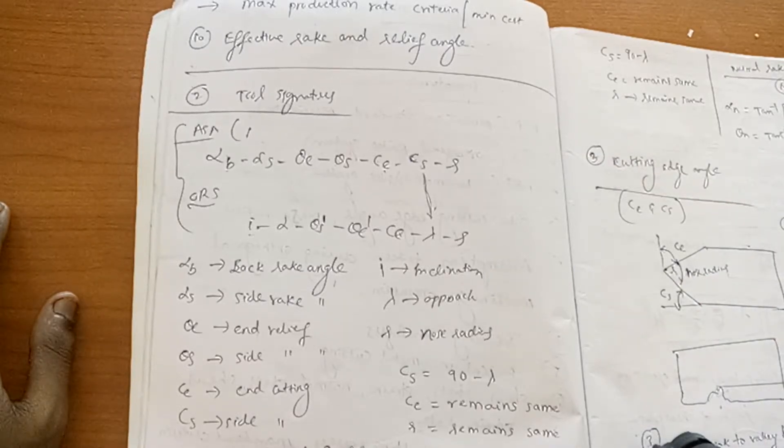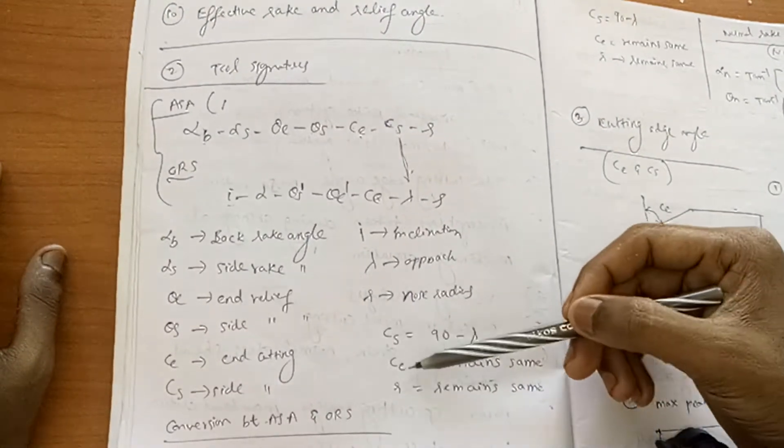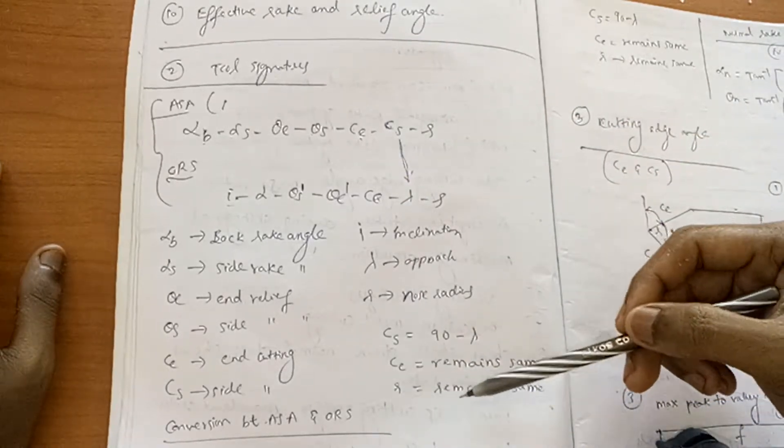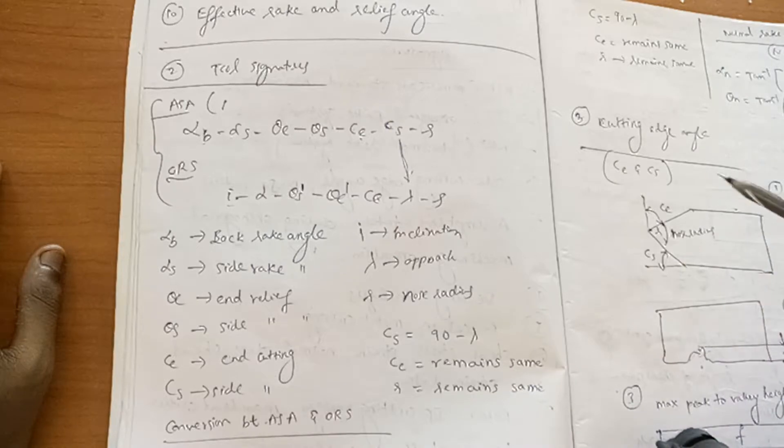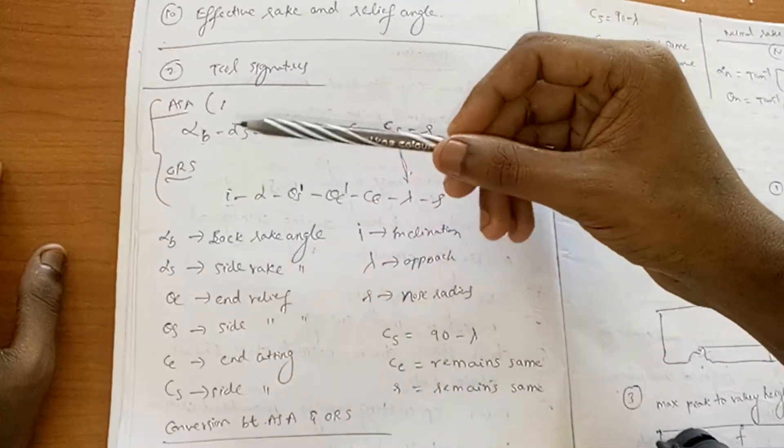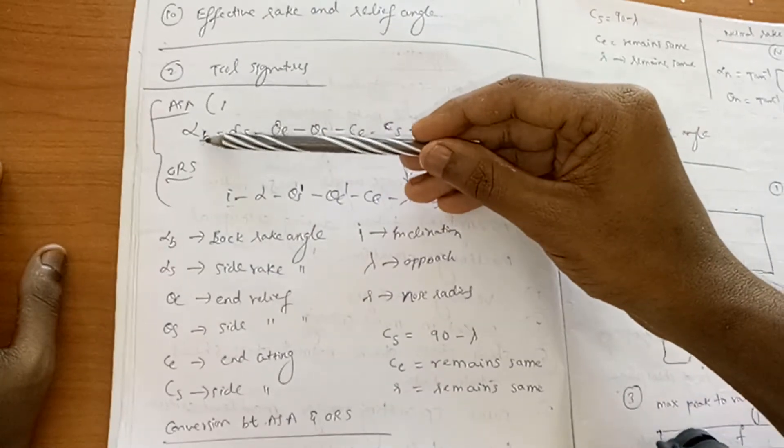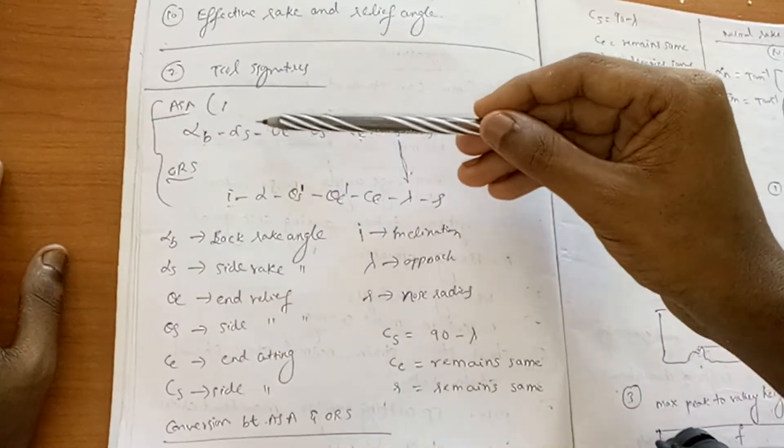Here in both the systems, CE end cutting edge angle are same, or nose radius is same. Here I means inclination, here alpha means effective relief angle. Here back rake angle, side rake angle.